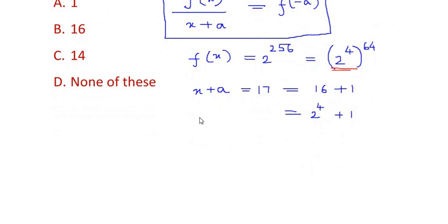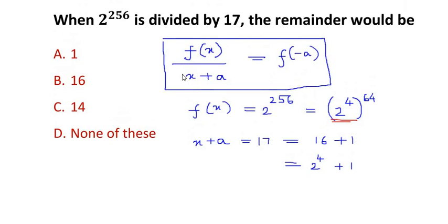So now this can be written as, using the given expression, 2 to the power of 4 raised to 64 divided by x plus a. So this is the divided number, 2 to the power of 4 plus 1, should give me a remainder of f of minus a.